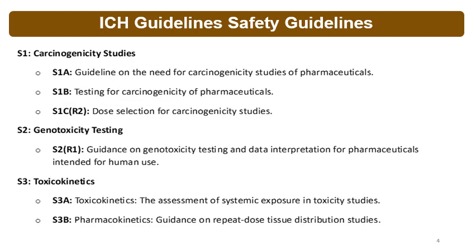The S1 guideline is for carcinogenicity studies. Three guidelines fall under S1: S1a, S1b, and S1c. S1a is the guideline on the need for carcinogenicity studies of pharmaceuticals. S1b covers testing for carcinogenicity of pharmaceuticals. S1c addresses dose selection for carcinogenicity studies. In summary, S1 covers all safety studies involving carcinogenicity.